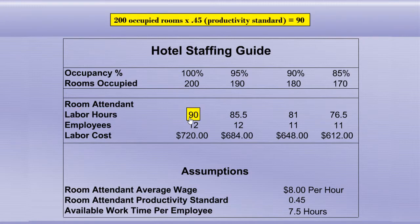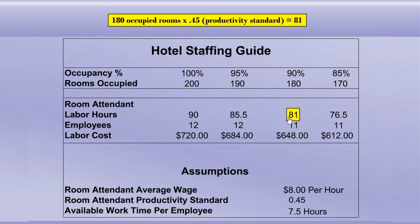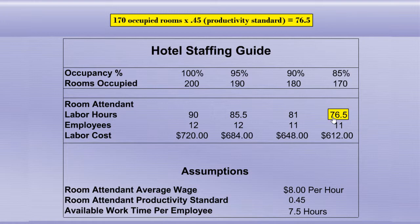200 occupied rooms times 0.45 equals 90. 190 occupied rooms times 0.45 equals 85.5. 180 occupied rooms times 0.45 equals 81. 170 occupied rooms times 0.45 equals 76.5.